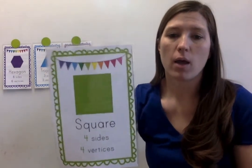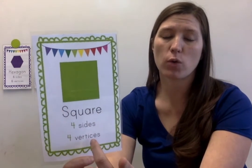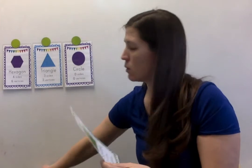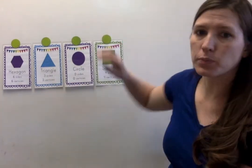Next is square. A square is special because all of the sides are equal. They're all the same size, all the same length. So a square has 4 sides, 4 vertices, and all of the sides are equal.